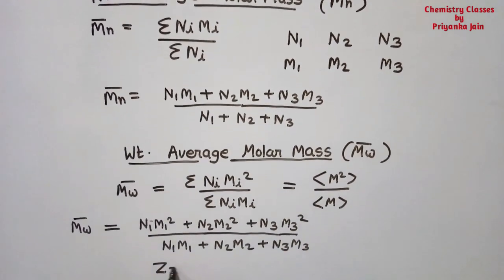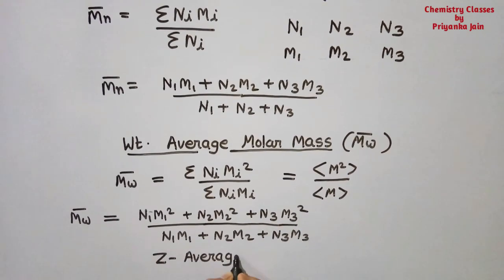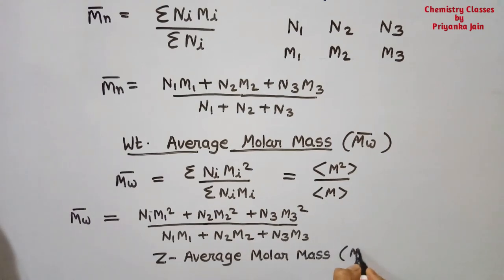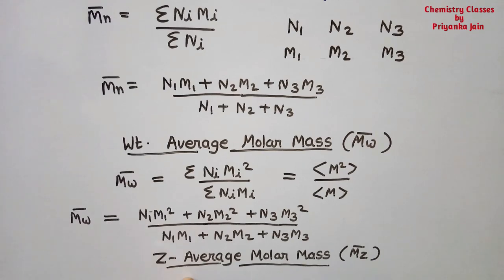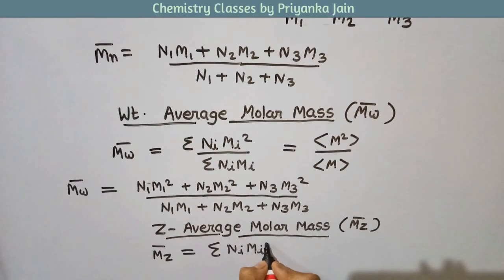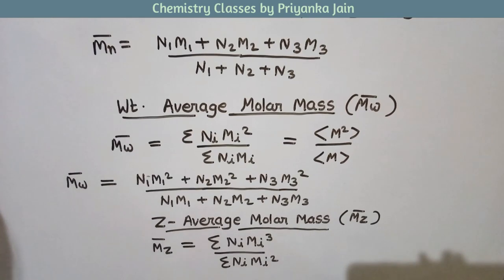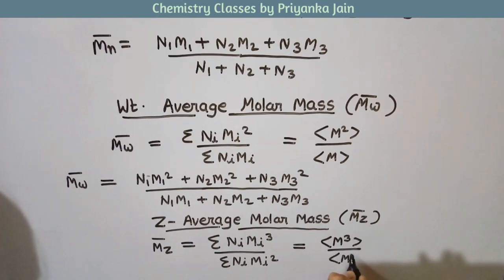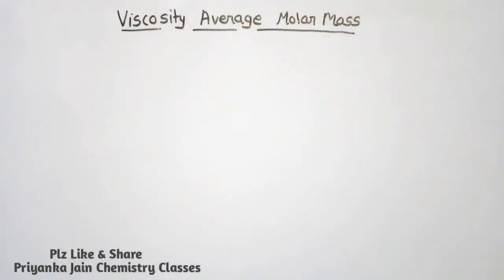Third is the z average molar mass. It is not asked as frequently, but you should know the formula: Mz = Σ(ni·Mi³) / Σ(ni·Mi²), which can also be written as the average of M³ divided by the average of M².